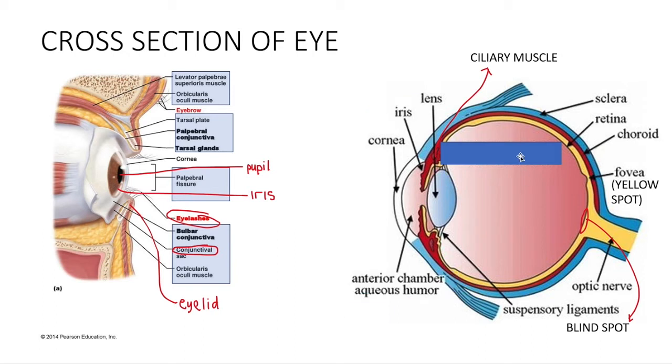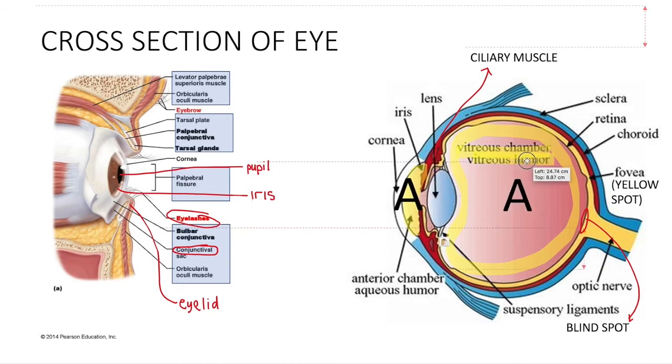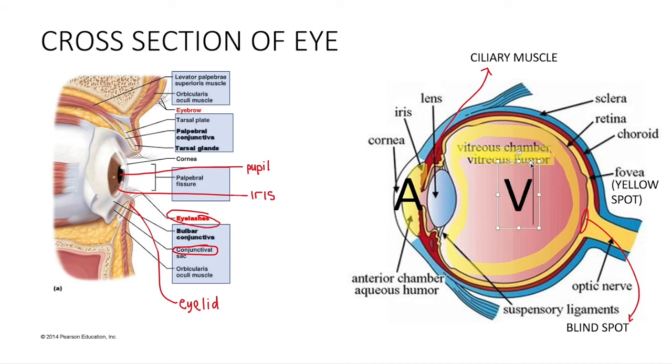Alright, and there are two gaps over here called the aqueous chamber and vitreous chamber. So aqueous chamber is filled with aqueous humor. Humor means fluid. Vitreous chamber is filled with vitreous humor. It's just a transparent fluid to allow light to pass through to allow images to form on the retina. So in the alphabetical order, A comes before B. So in front will be the letter A and then letter B. It's easier to remember like that.